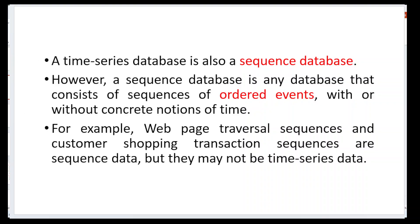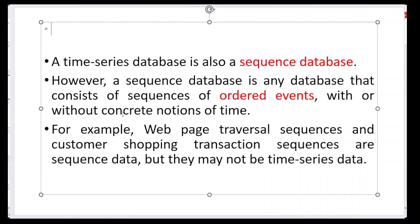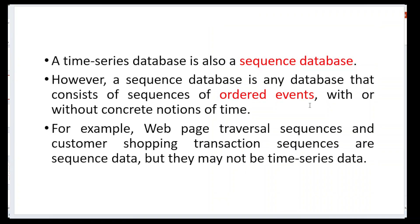A time series database is also called a sequence database. Each sequence database consists of sequences of ordered events — with or without respect to time. Web page traversal sequences and customer shopping transaction sequences are examples of sequence data. We can find out the sequence of a user's web browsing — how they go from one page to another — and what patterns a customer follows while purchasing products.